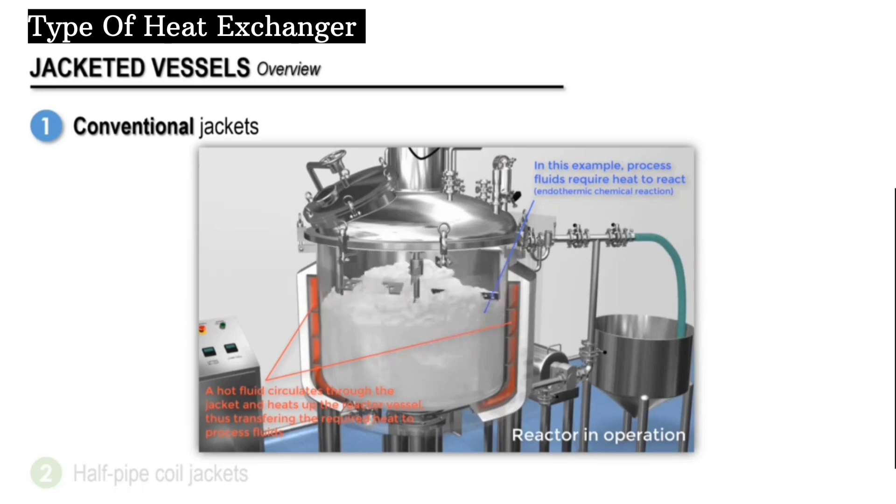The hot fluid heats up the reactor vessel and the vessel passes some of the heat to the cold fluid. As a result, the hot fluid temperature decreases and the cold fluid temperature increases.